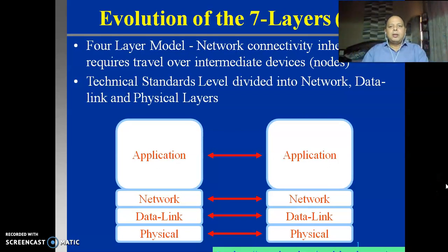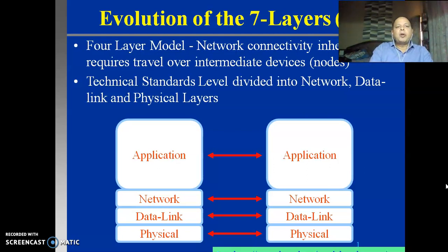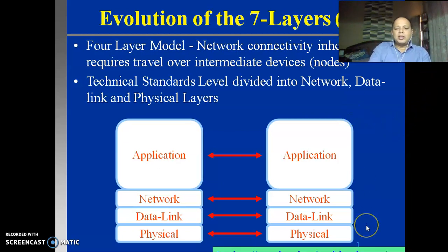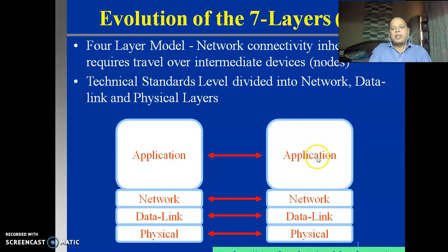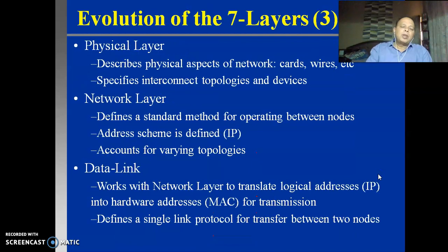In the first video, we have seen how this seven layer model is getting to be evolved. We have seen the two layer model or one layer model. From the one layer model to two layer models, we have come to four layer models. This four layer model has got four layers - the topmost layer is the application layer, and the technical layers are divided into network layer, data link layer, and physical layer. Now we will see how this is categorizing the functions and the steps of data communication.